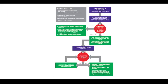To briefly run through the BLS algorithm for children and infants: high quality CPR consists of a rate of at least 100 compressions per minute. Compression depth should be at least one-third the diameter of the chest. Allow chest recoil between compressions, minimize interruptions in chest compressions, and try not to over-ventilate.